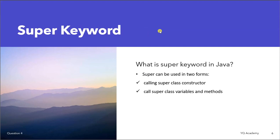Number 4: What is the super keyword in Java? Variables and methods of superclass can be overridden in subclass. In case of overriding, a subclass object calls its own variables and methods, and cannot access the variables and methods of superclass because the overridden members hide them. Java provides a way to access superclass members even if they are overridden using the super keyword. Super is used to access superclass variables, methods, and constructors in two forms: the first for calling superclass constructors, the second for calling superclass variables and methods. Super, if present, must be the first statement.